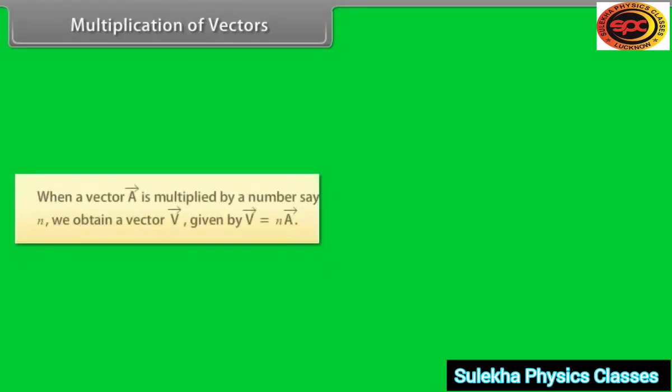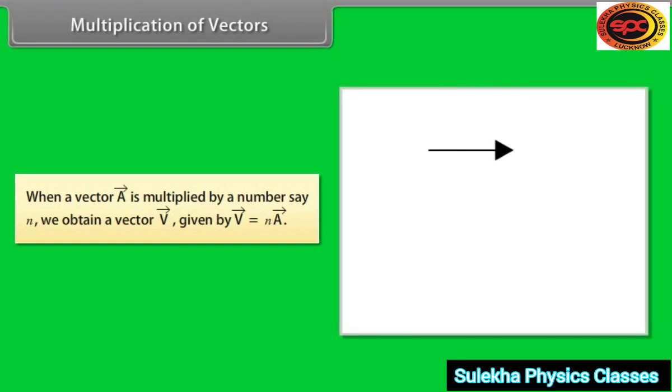When a vector A is multiplied by a number say n, we obtain a vector V given by V = nA. Let's take an example. If a vector A is multiplied by 2, the resultant vector 2A is in the same direction as A and has a magnitude twice of A.